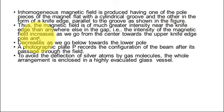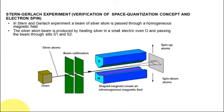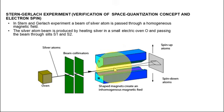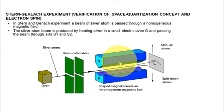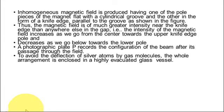The intensity of the magnetic field increases as we go from the center towards the upper knife-edged south pole, and decreases as we go below towards the lower flat north pole. The magnetic field increases as we move from the center towards the sharp knife edge and decreases as silver atoms move from the center towards the cylindrically flat north pole. There is therefore a gradient of the magnetic field developed across the gap.